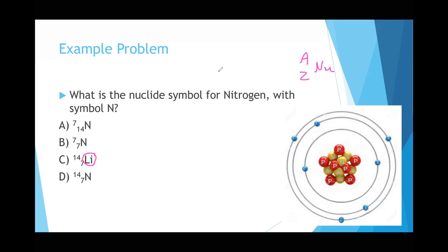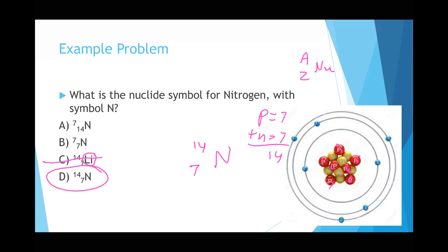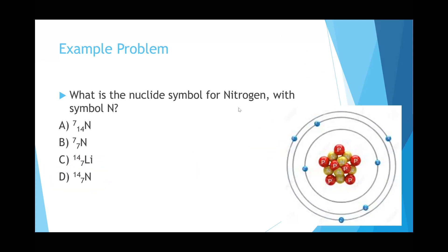Okay, I'm going to end it and let's see the results. Most of you said D and that is the correct answer — good job everyone. Let me do it on the board. The symbol is N, so that automatically eliminates C. The atomic number Z is the number of protons: one, two, three, four, five, six, seven — so it's seven. There are also seven neutrons. So protons equals seven, neutrons equals seven, and the mass is 14. So it's 14 over 7 N — that's D.